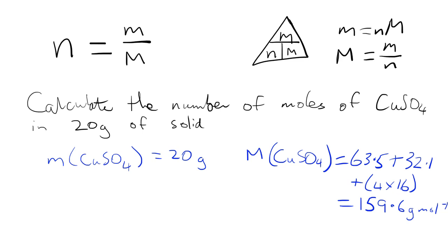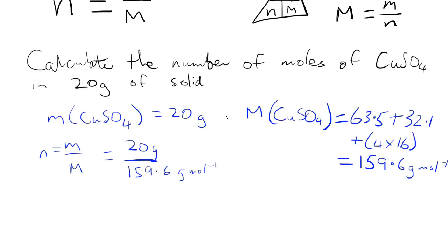So I have all the data I need now to complete this question. I'm just going to put those numbers to my formula n equals little m over big M, so I have 20 grams and I want to divide that by 159.6 grams per mole.